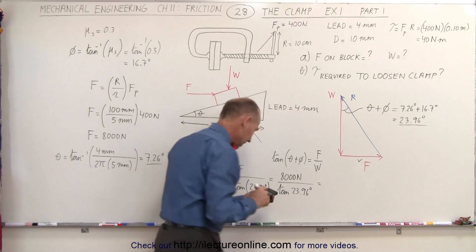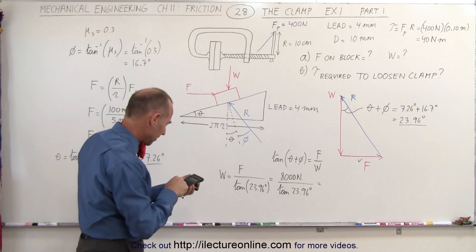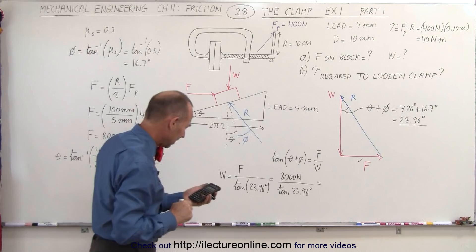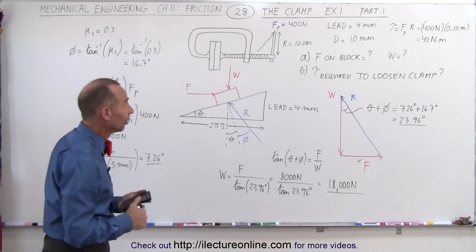8,000 newtons divided by the tangent of 23.96 degrees. And let's see what we get. So we add that 2 plus 16.7, take the tangent of that and take the inverse and multiply that times 8,000.